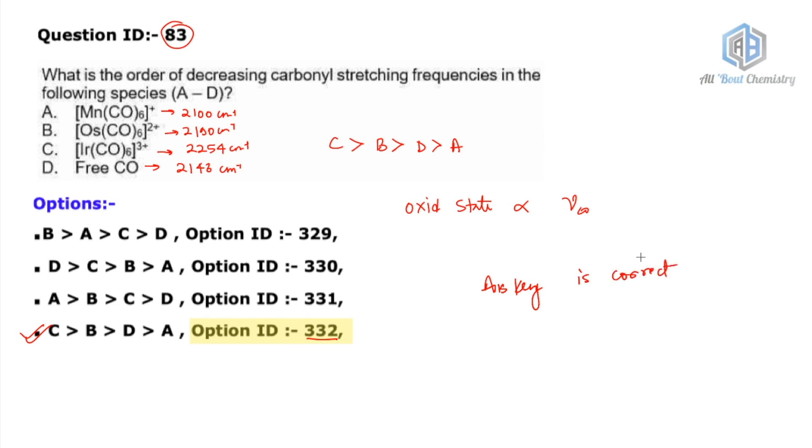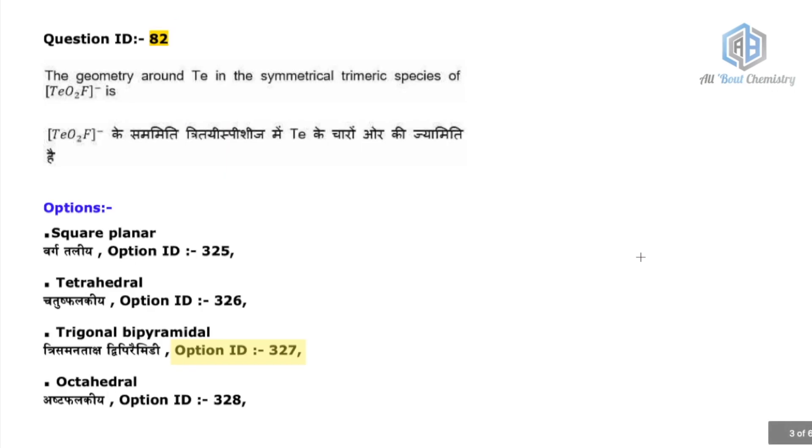Question 83 sorted. So many requests were there for 83. I hope now you understood. Let's go to the next highly debated question, that is Question number 82, which says that the geometry around tellurium in the symmetric trimeric species of TeO₂F⁻ is. Now here the question is actually from a research paper. It's not a direct question, it's not from your notes.